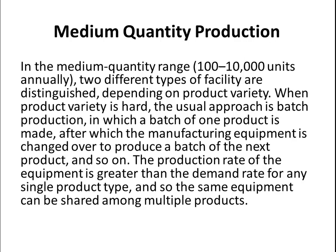Different varieties of products are produced batch by batch. When one batch is finished, another batch starts to be produced, and more products are produced than the demand requires. The parts produced can be used to produce multiple products.